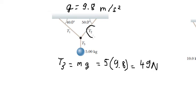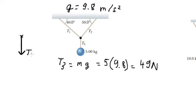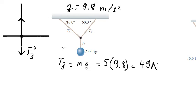Now I will go to T1 and T2. I will put the black dot here. T3 goes downward because we have the weight going down. T1 goes this way and T2 goes this way.